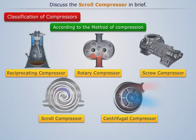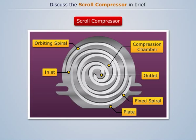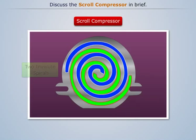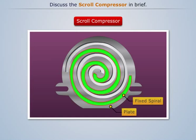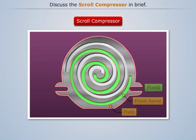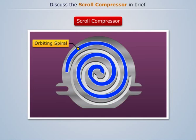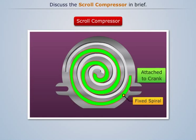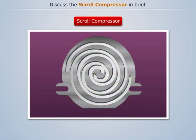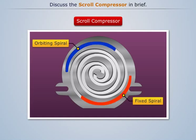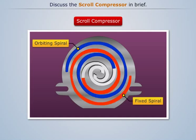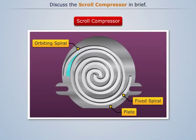A typical scroll compressor consists of two involute spirals. One of them is fixed to the plate, and the other orbits around the fixed spiral. The orbiting spiral is attached to the crank of the compressor. The fixed and the orbiting spiral have geometrically matching surfaces.